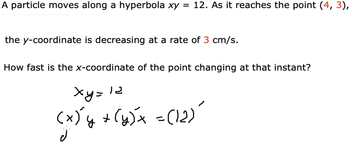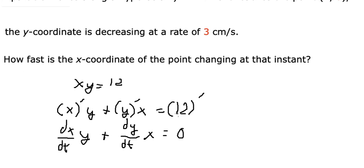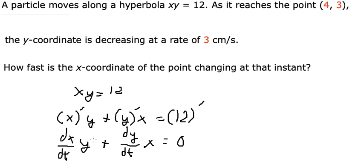This one we have dx/dt. This one we have dy/dt. And this one we got 0. The derivative of a number is 0. Now x is 4, y is 3.